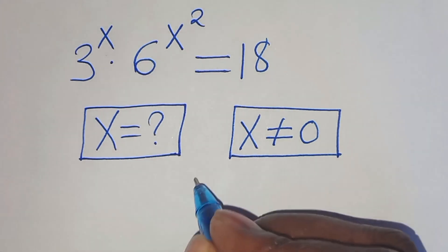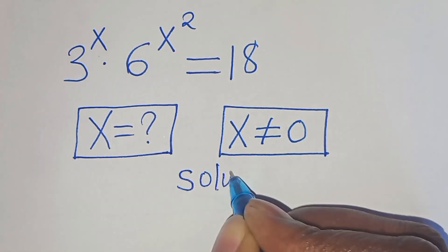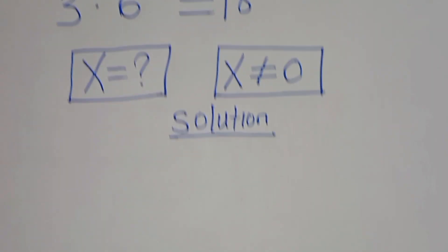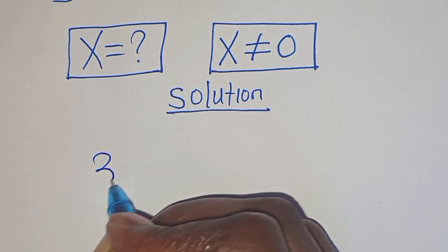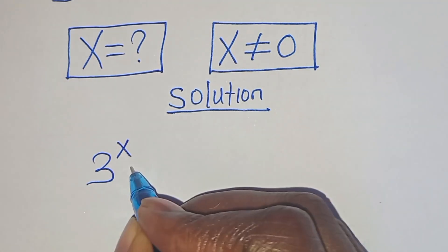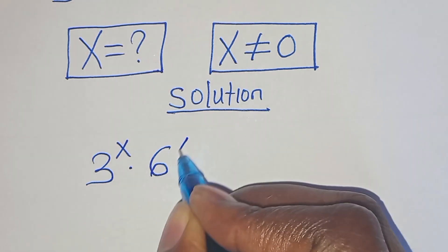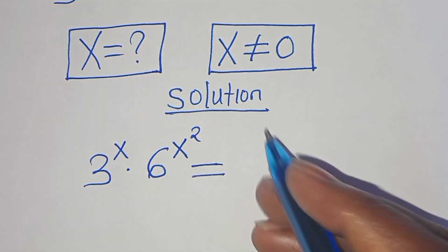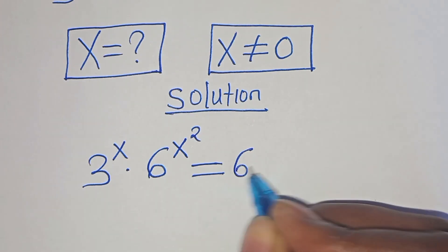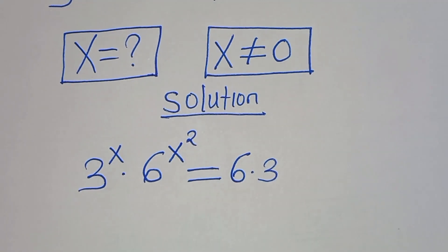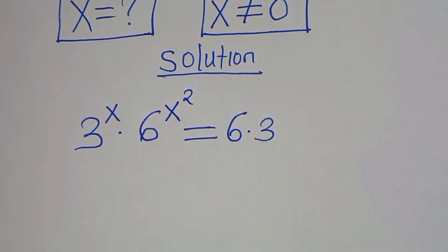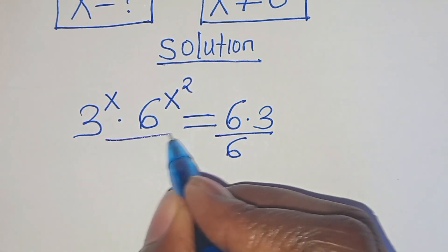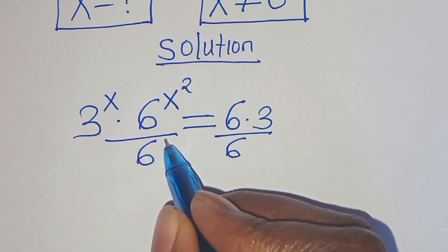So let's present a solution from here. We have 3 to the power of x times 6 to the power of x squared, equal to 18. We can express 18 as 6 times 3. So the first step is to divide both sides by 6. Remember, 6 is raised to the power of 1.